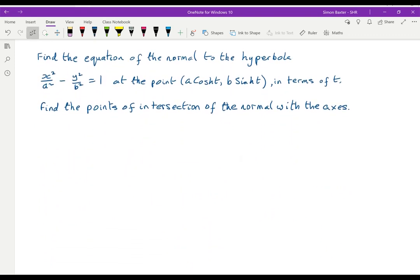Find the equation of the normal to the hyperbola x²/a² - y²/b² = 1 at the point where x is a cosh t, y is b sinh t, and give the answer in terms of t. Then go on and find the points of intersection of the normal with the coordinate axes.